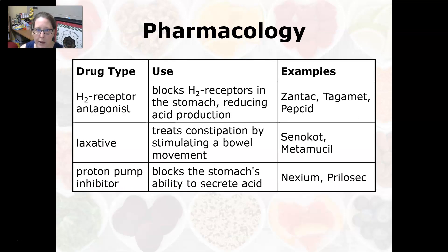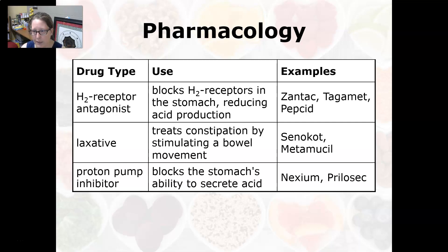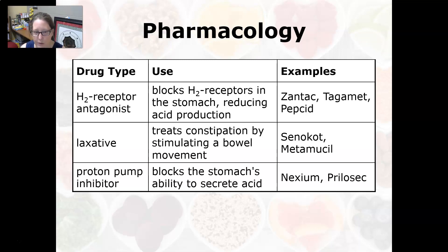An H2 receptor antagonist blocks H2 receptors — which are histamine receptors — in the stomach, reducing acid production. Examples include Zantac, Tagamet, and Pepcid. Note: these are different from proton pump inhibitors. Used long-term, H2 receptor antagonists can cause other digestive issues, so use with caution.